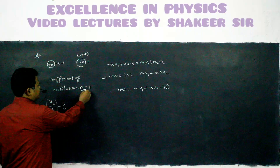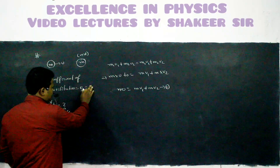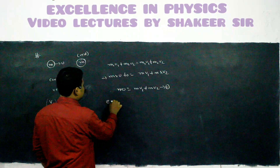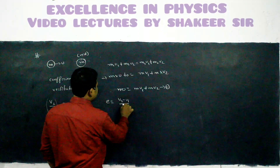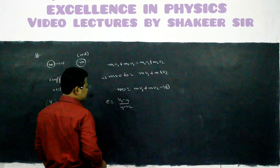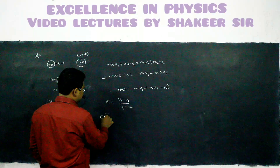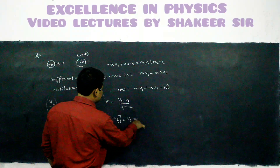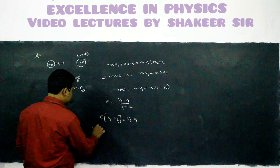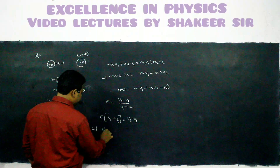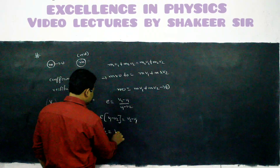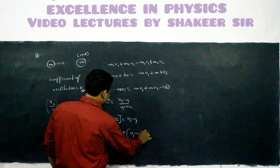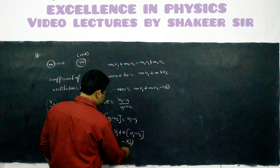He gave coefficient of restitution. What is coefficient of restitution? V2 minus V1 by U1 minus U2. Therefore, E into U1 minus U2 equals V2 minus V1. So V2 equals V1 plus E into U1 minus U2. Let it be my equation number 2.